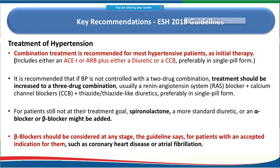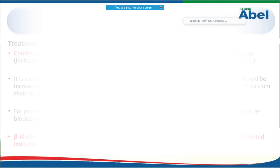If three-drug combination therapy is still insufficient, a more potent diuretic like spironolactone, or an alpha or beta blocker, can be added. Beta blockers should be considered at any stage, especially if the patient has coronary heart disease or atrial fibrillation.